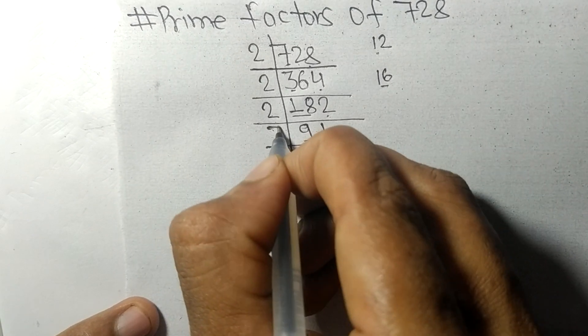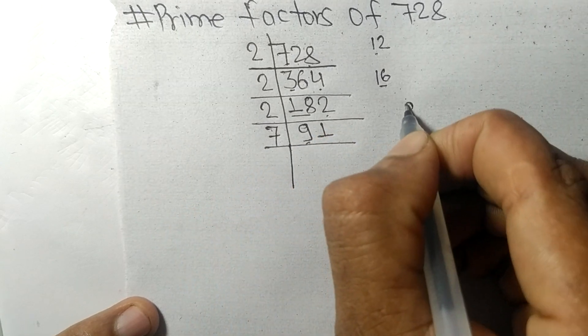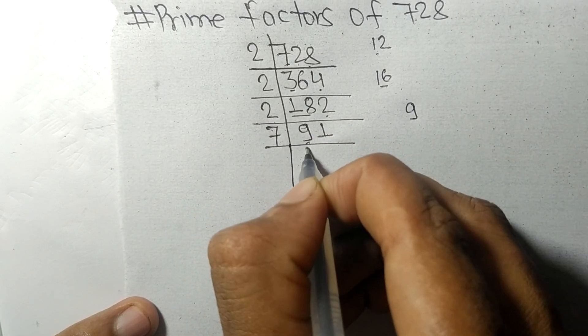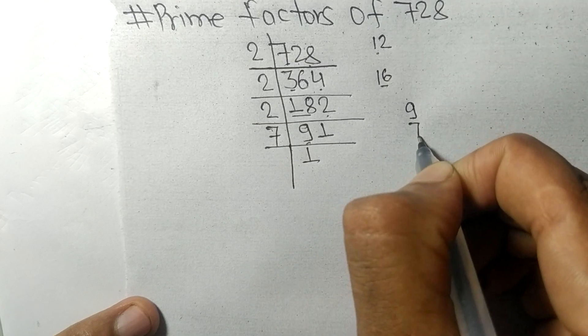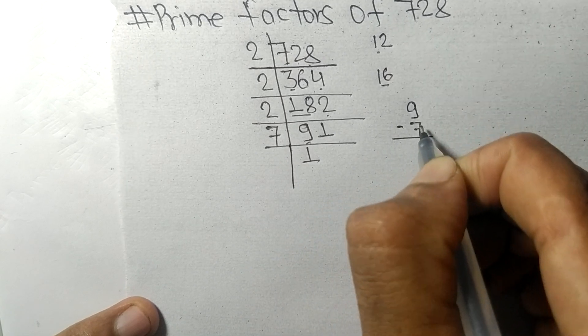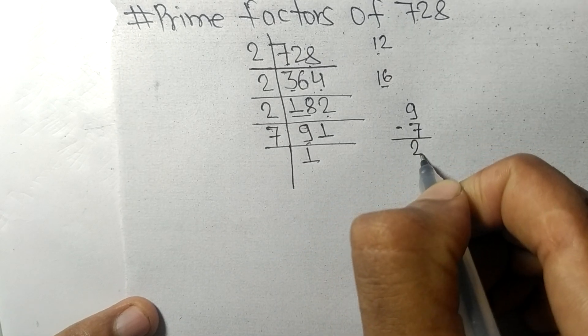First we have 9. 7 times 1 is 7, and on subtracting we get 2. Then 21. 7 times 3 is 21. So now we got 13, which is a prime number.